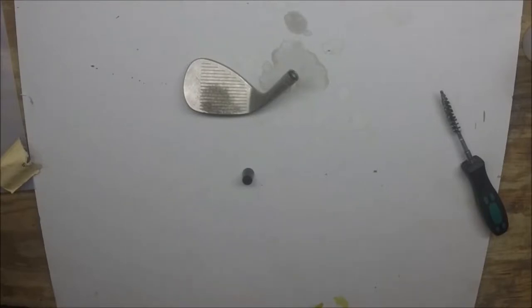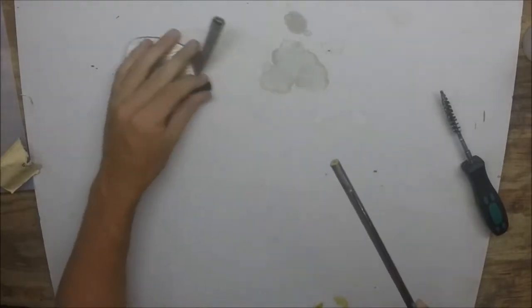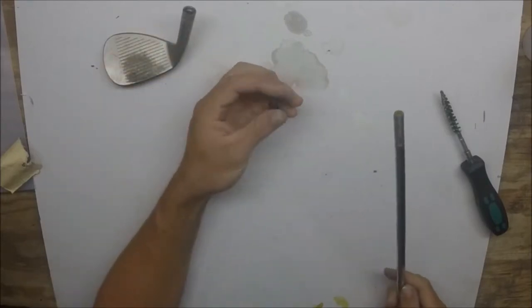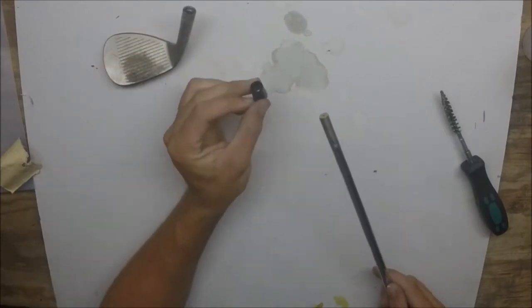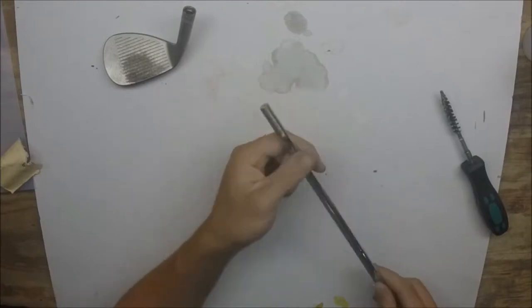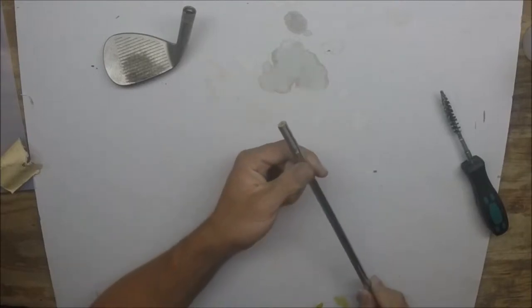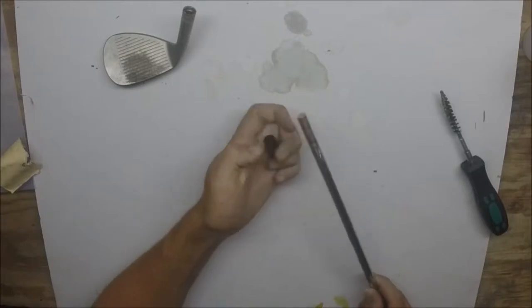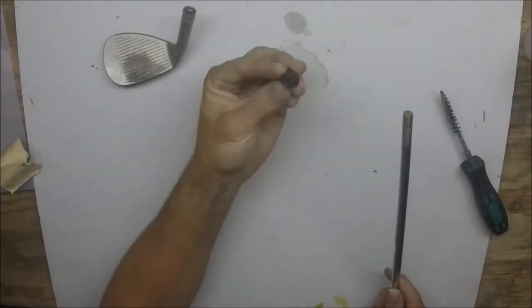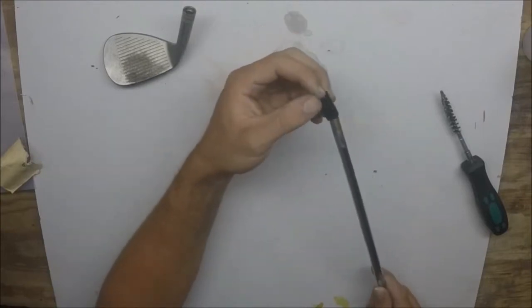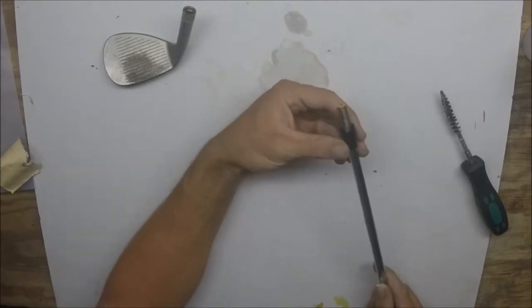After you've cleaned both the shaft and the club head, you need to put the ferrule on the shaft. You need to make sure that the ferrule fits the shaft correctly. This is a .335 taper tip shaft, and this is a .335 taper tip ferrule, so they match. You put this on just like that.